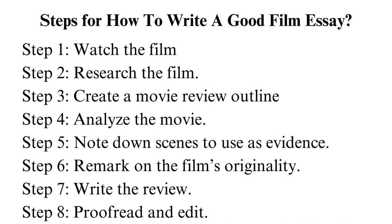The necessary details to research are genre, title, names of directors, names of lead actors, and the title of the book if it is based on one. Step 3 — create a movie review outline. Draft an outline, as it will assist you in organizing your movie review logically and concisely. When creating your outline, start by listing the seven details of a movie review format mentioned above. Later on, you will fill in the details with more information.